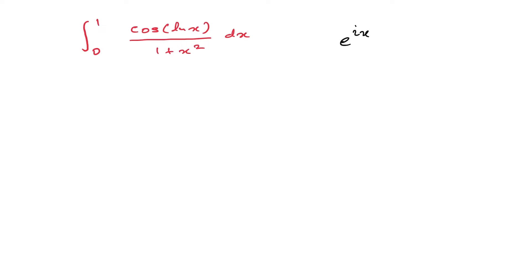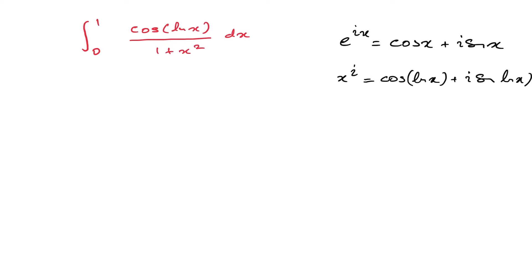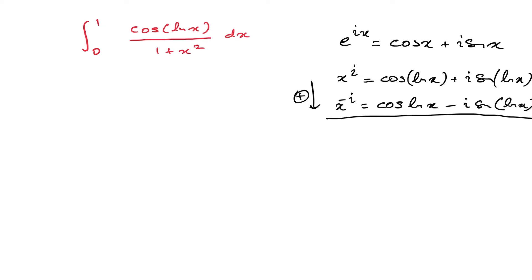First, we know e to the ix is equal to cosine of x plus i times sine of x. Then we know x to the i is equal to cosine of natural log of x plus i times sine of natural log of x. If we take x to the minus i, we have cosine of natural log of x minus i times sine of natural log of x.